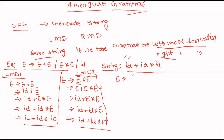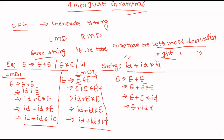Rightmost derivation 1: E → E plus E. In rightmost derivation, you replace the rightmost variable. Replacing that variable gives E plus E into id. Then E plus id into id. Finally, id plus id into id. This is one rightmost derivation.